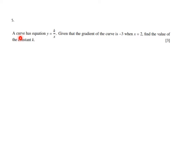Let's see what's going on. It says a curve has equation y equals k over x. Given that the gradient of the curve is minus 3 when x is 2, we're going to find the value of the constant k.